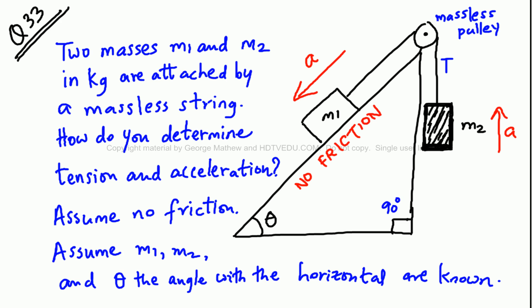Question number 33. Two masses M1 and M2 in kg are attached by a massless string. How do you determine tension and acceleration? Assume no friction. Assume M1, M2, and theta, the angle of the horizontal, are unknown.